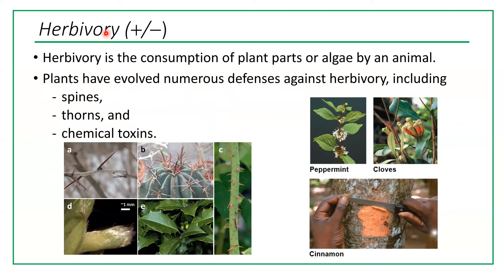Another example of plus-minus interaction is herbivory — the consumption of plant parts or algae by an animal. Plants have many defense mechanisms against herbivory, including spines, thorns, and chemical toxins. Even what we use in cooking — peppermint, cloves, cinnamon — these are actually protective chemicals and toxins that plants produce to keep herbivores away.